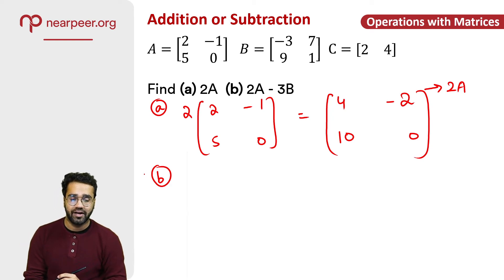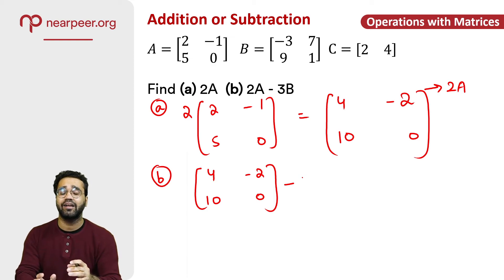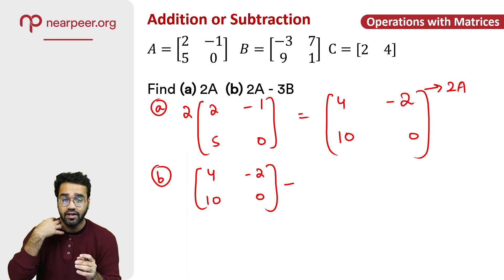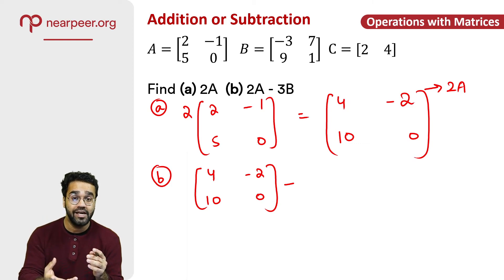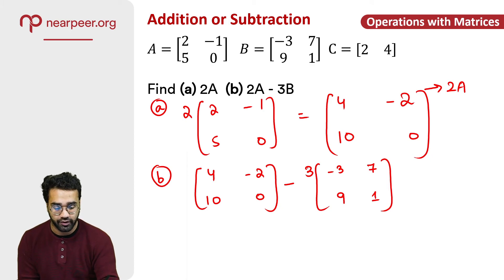Now the next part is 2A minus 3B. So I've already calculated 2A which is 4, 10, minus 2, and 0. I've written that in place of 2A. Now for minus as it is. Now for 3B, I need to multiply the matrix B by 3. So minus 3, 9, 7, and 1. Now I need to multiply this first before I solve it. So this should be 3 times. Also I'm going to keep the minus here. I am just multiplying each value in the matrix B by 3 first.